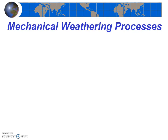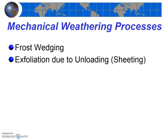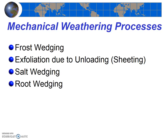We're going to deal with mechanical weathering processes first. Mechanical weathering is simply the breaking down of rock into smaller pieces. We're going to cover five important mechanical weathering processes: frost wedging, exfoliation, salt wedging, root wedging, and thermal expansion. We're going to go through each of these five and discuss how it works, where we might find it, and which rocks might be most susceptible.